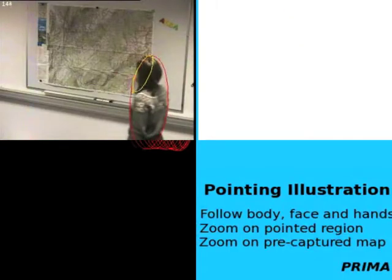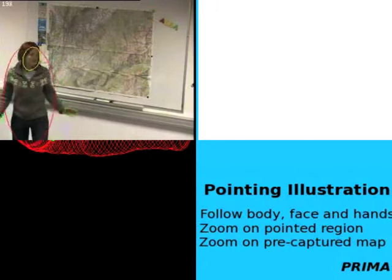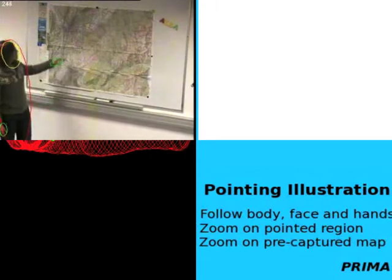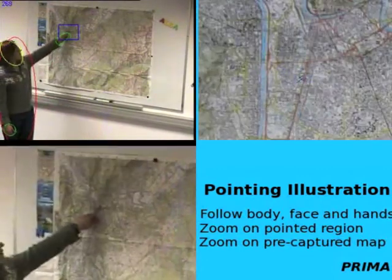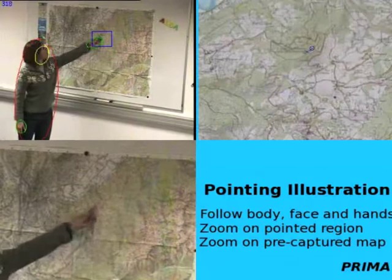Visual tracking has many applications. In this example, we see a hierarchy of trackers, with a body tracker being used to find target positions for a face and hands.